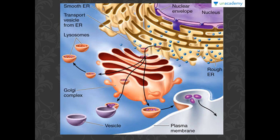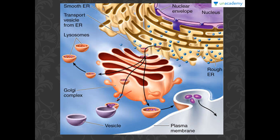In this second diagram, we again have the nuclear envelope with the nucleus present. Attached to it is the rough endoplasmic reticulum, and where ribosomes are not attached, we have the smooth endoplasmic reticulum. Some lysosomes are present, along with the discs of the Golgi complex, some vesicles, and the plasma membrane.